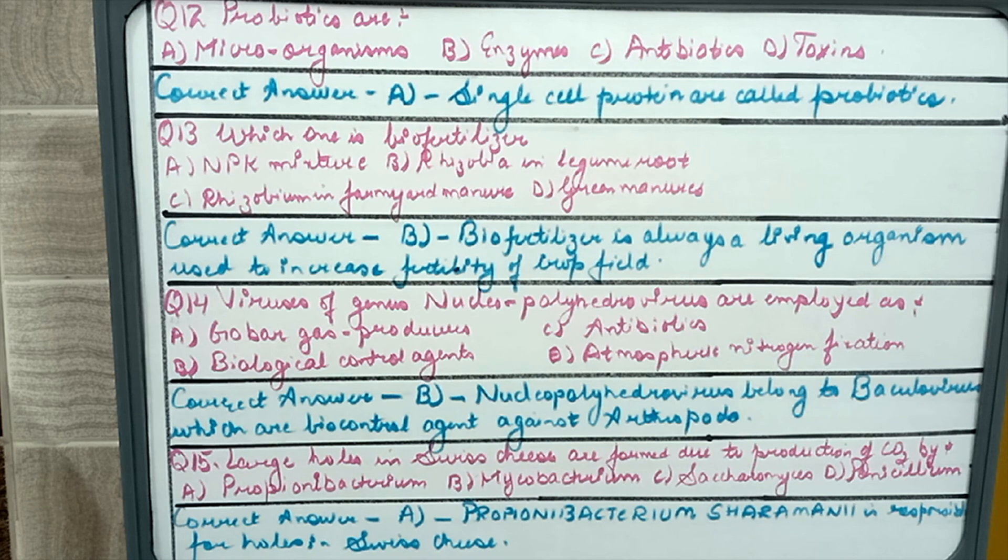Question 15: large holes in Swiss cheese are formed due to production of CO2 by. This question is directly from NCERT. Swiss cheese has many holes due to bacteria Propionibacterium shermanii and so Swiss cheese has many holes.